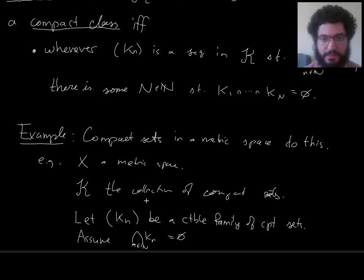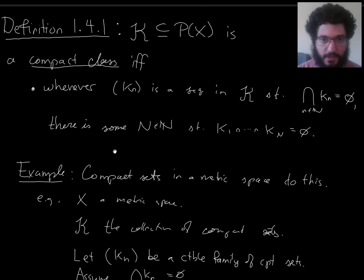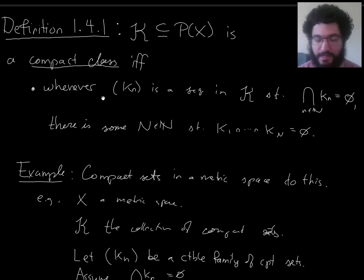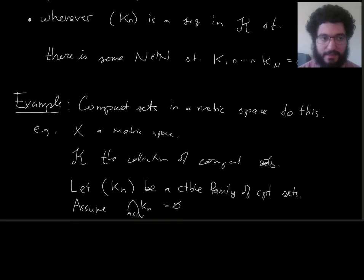Then can we verify that there's some finite subcollection that intersects to give the empty set? Well, one thing that makes the situation easier is that if you intersect two compact sets, you get a compact set. Intersection. They're closed under intersection. So here, k is closed under finite intersections.